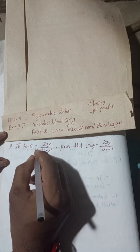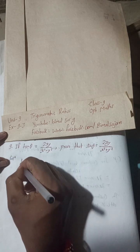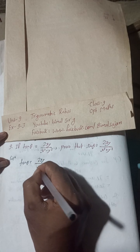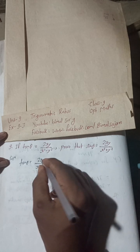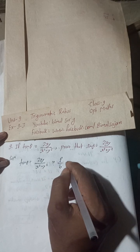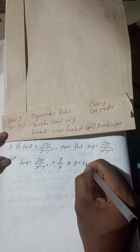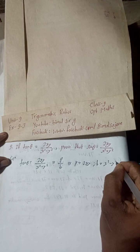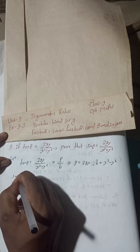Given: tan θ = 2xy / (x² - y²). Since tan θ = P/B, that is perpendicular over base, we get: perpendicular P = 2xy, and base B = x² - y².